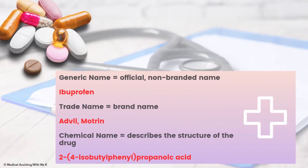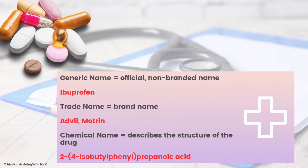The generic name of a medication refers to the official name. An example would be ibuprofen or acetaminophen. The trade name for ibuprofen could be Advil or Motrin — those are the branded, trademarked names. A trade name for acetaminophen is Tylenol. The chemical name is the scientific makeup describing the structure of the drug.